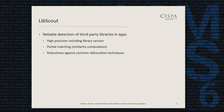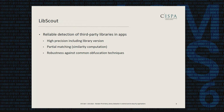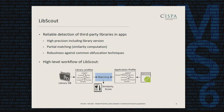That's exactly where our approach LibScout comes in. We want to provide reliable detection of third-party libraries with high precision down to pinpointing the exact library version. We also want to measure to which extent a certain library is included in the application, and we want to be robust not only against common obfuscation techniques like identifier renaming, but also against more advanced code-based obfuscation techniques.